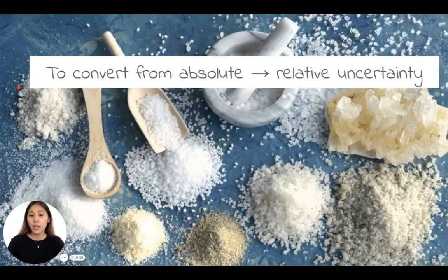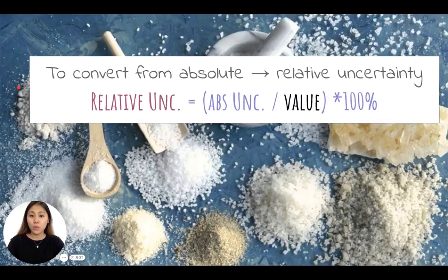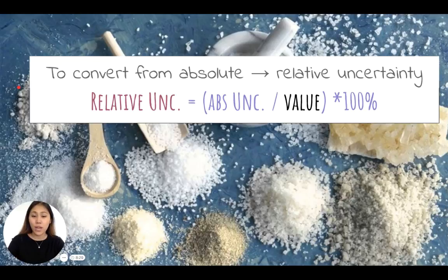We've also seen the formula involved in this specific conversion from absolute to relative: relative uncertainty equals the absolute uncertainty divided by value, multiplied by a hundred percent.